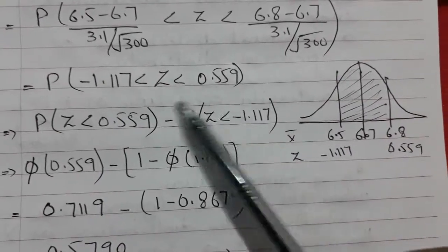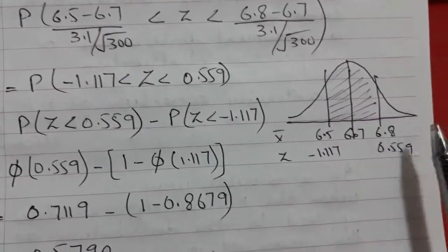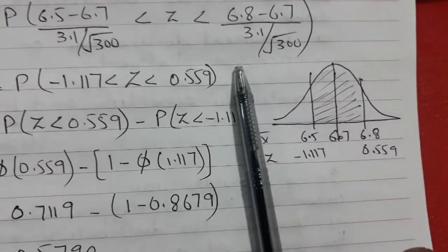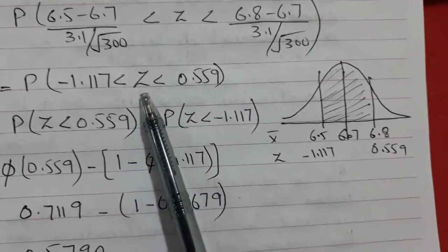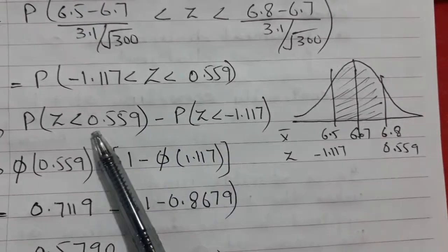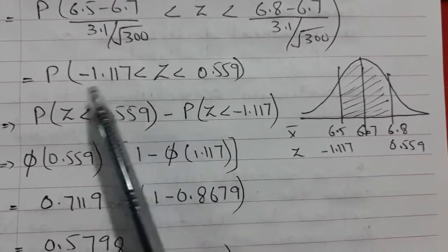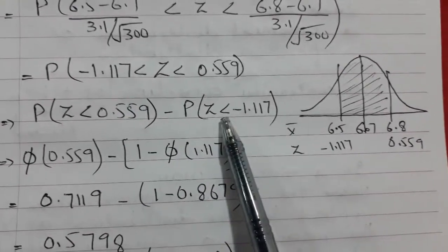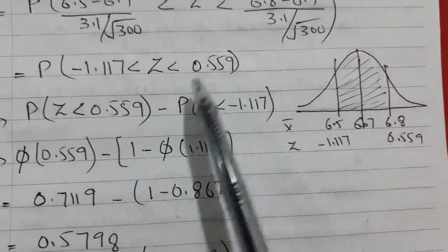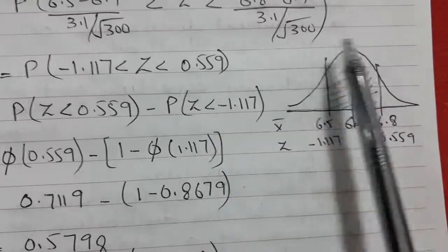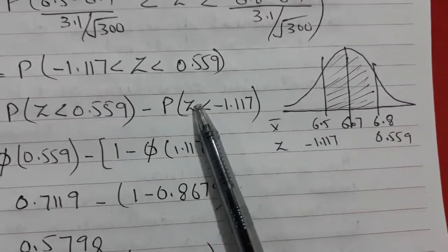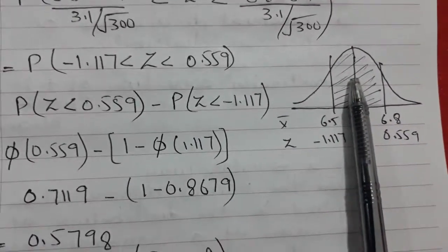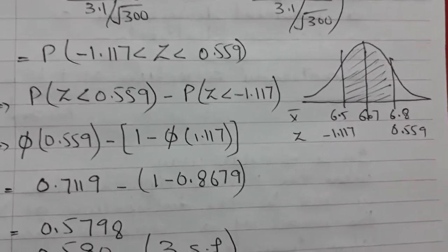To calculate this probability, we split it: P(Z < upper value) minus P(Z < lower value). Students sometimes get confused when a 'greater than' symbol appears, but we are just rewriting the same interval as the difference of two cumulative probabilities. Splitting it into two parts makes the calculation simpler.